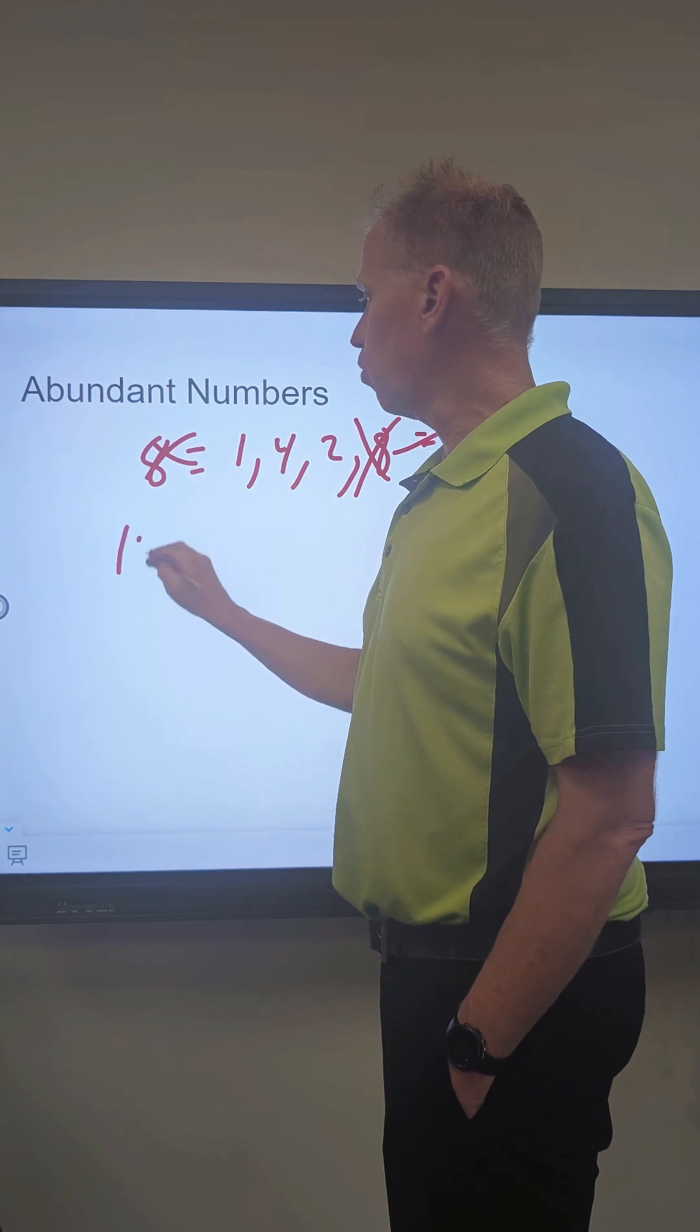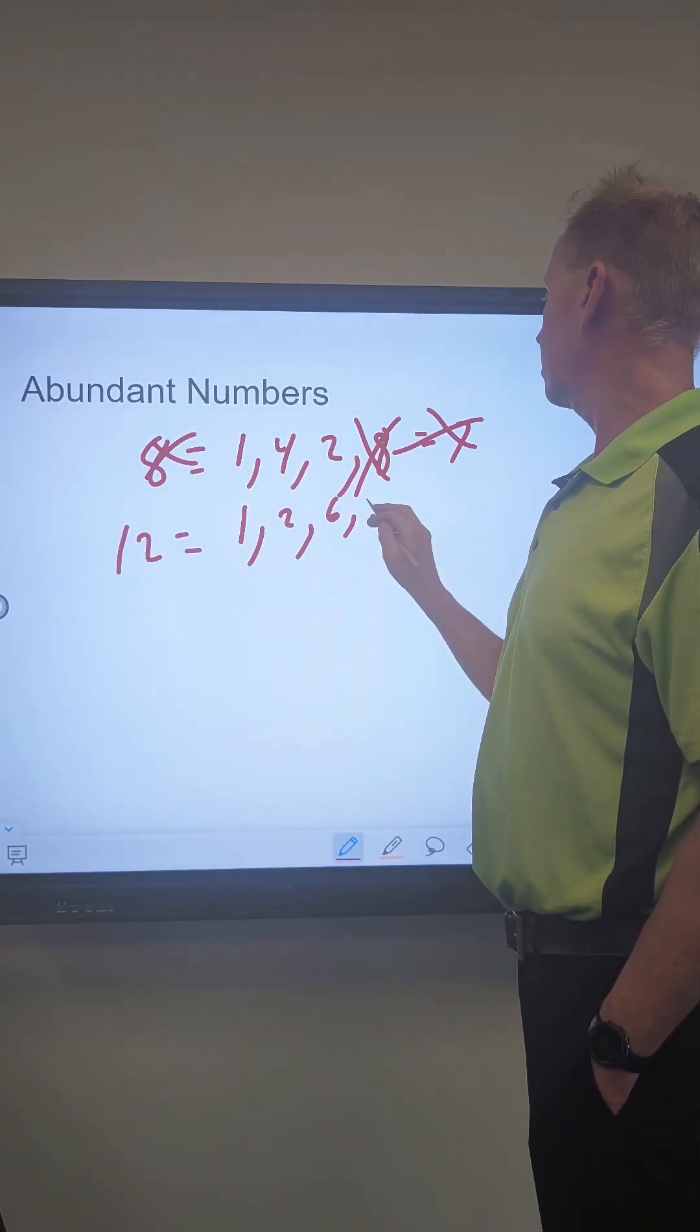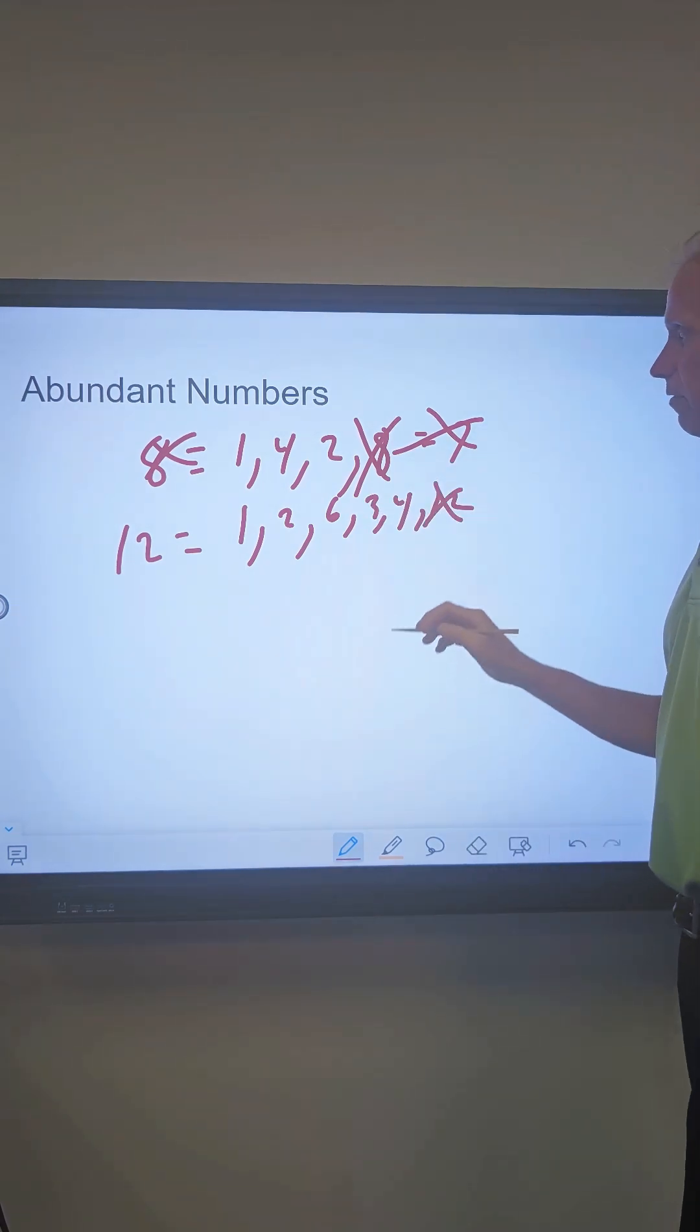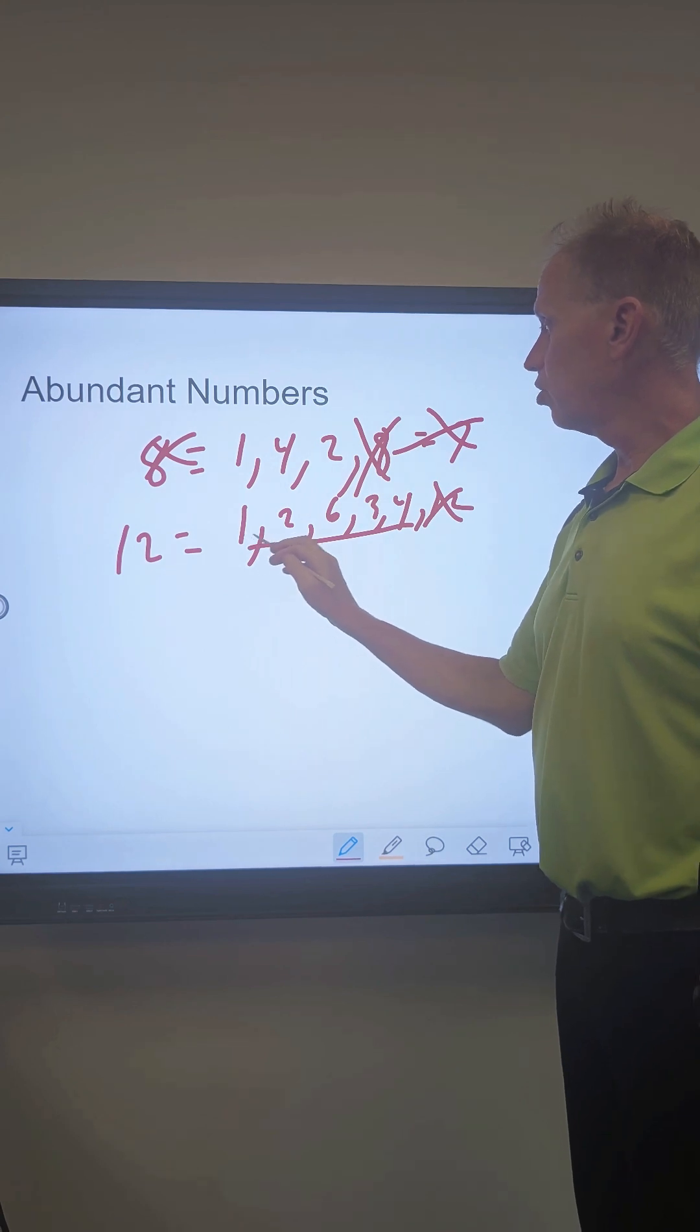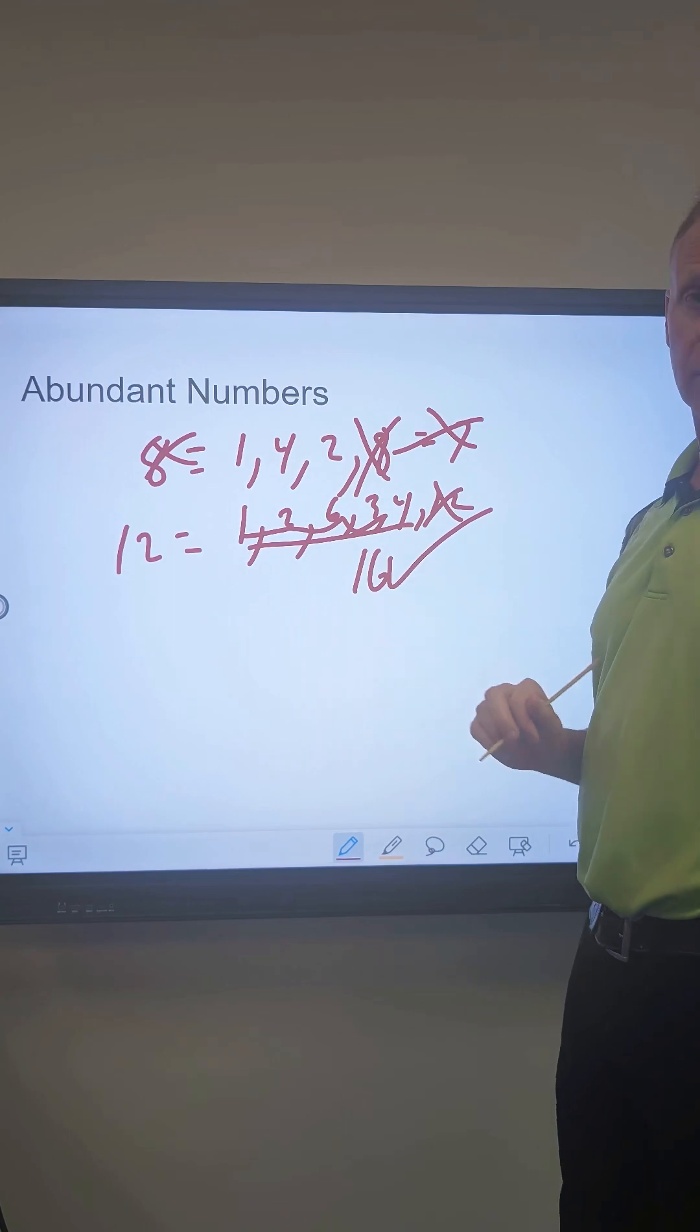So let's look at 12. 12's factors are one, two, six, three, four, and 12. I don't worry about the 12, so I add up the rest. Two plus one is three, nine, 12, 16. So that's an abundant number.